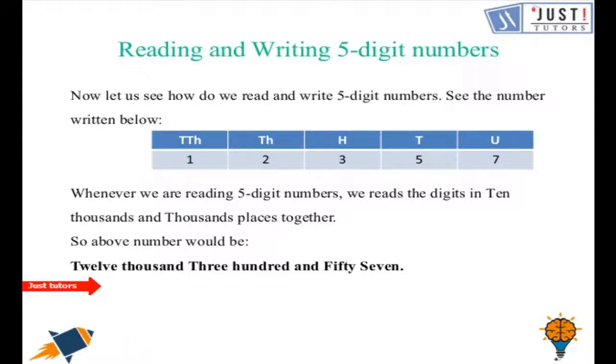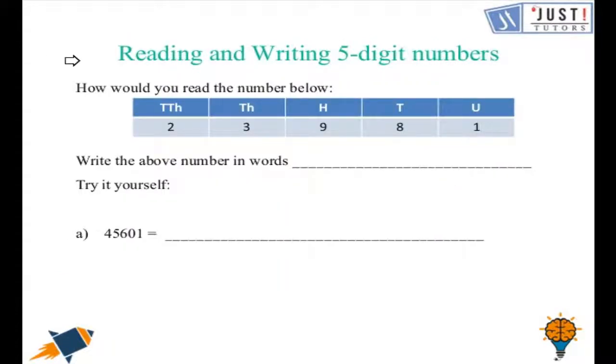Let us move ahead and try to solve a few questions related to reading and writing 5-digit numbers. So how would you read this number which is given here in the place value chart? Again keep the rule in mind you have to keep 10,000 and the thousands column together. So try to write down the above number in words.